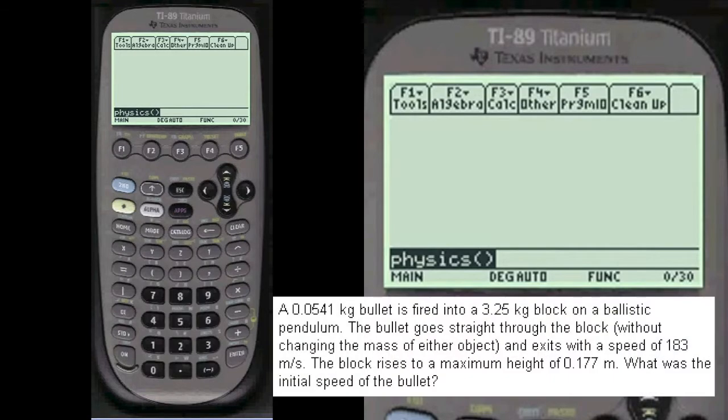Physics test problem. A 0.0541 kilogram bullet is fired into a 3.25 kilogram block on a ballistic pendulum. The bullet goes straight through the block without changing the mass of either object and exits with a speed of 183 meters per second. The block rises to a maximum height of 0.177 meters. What was the initial speed of the bullet?